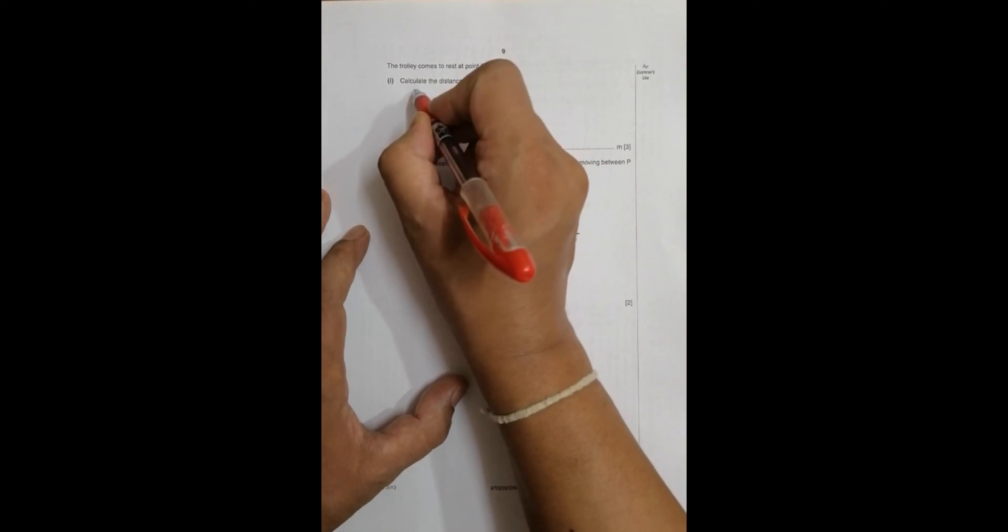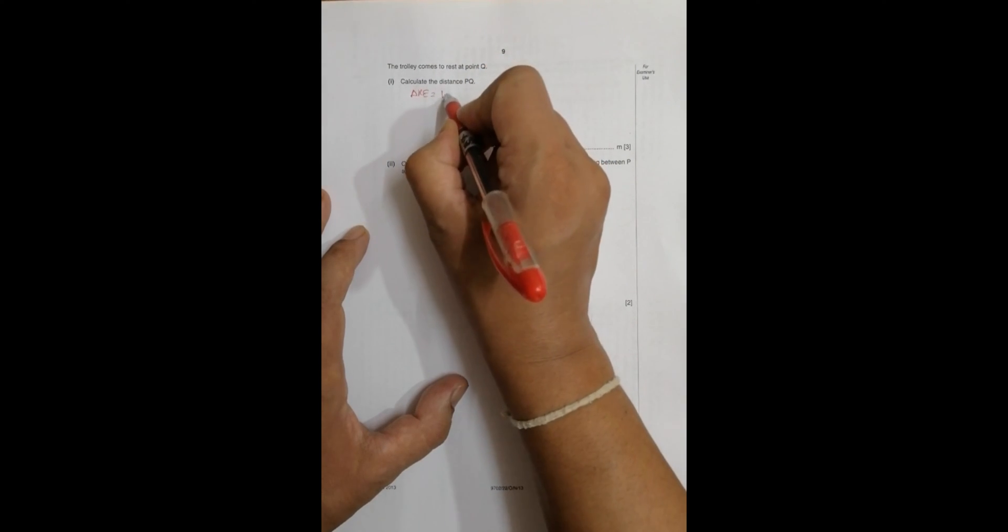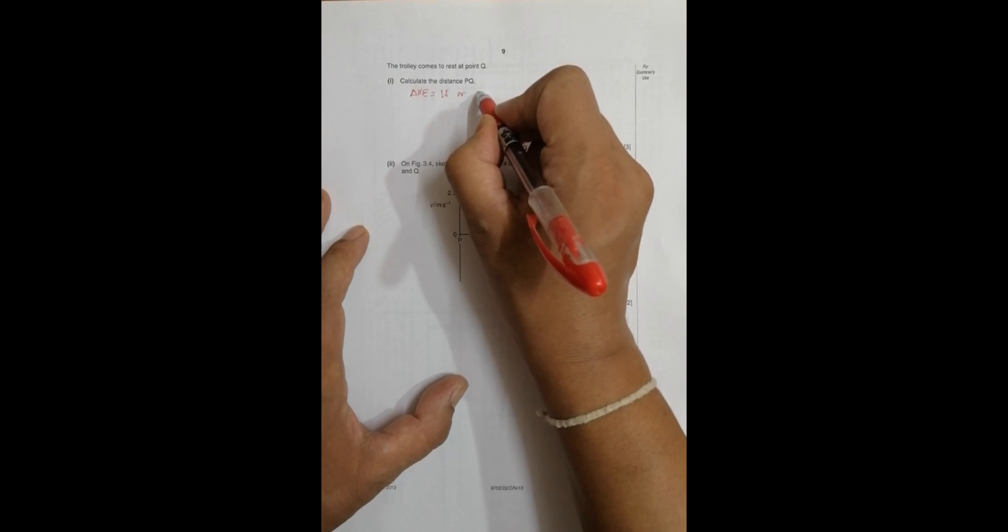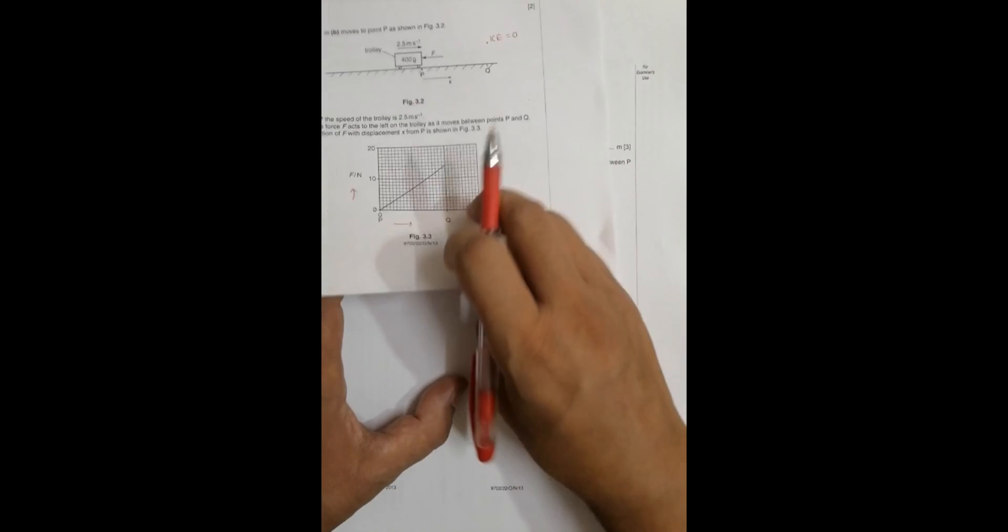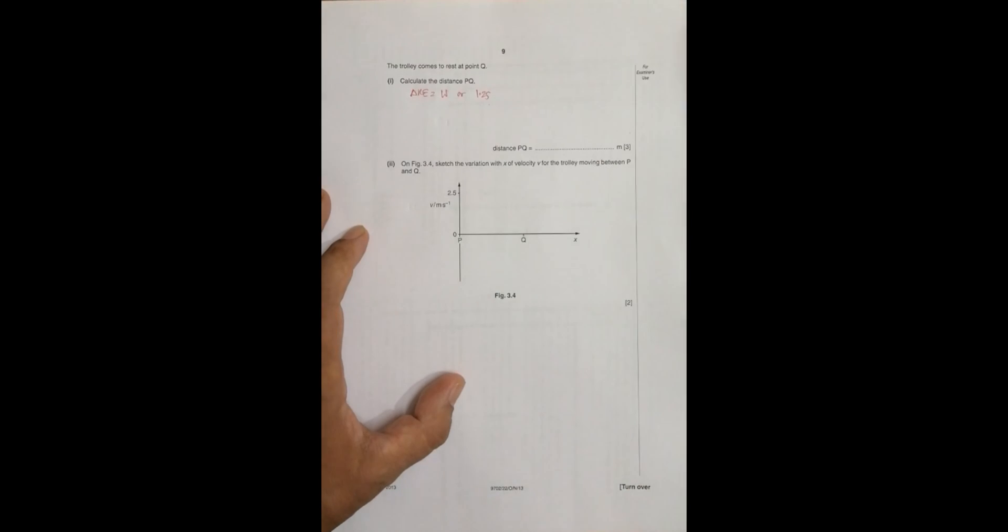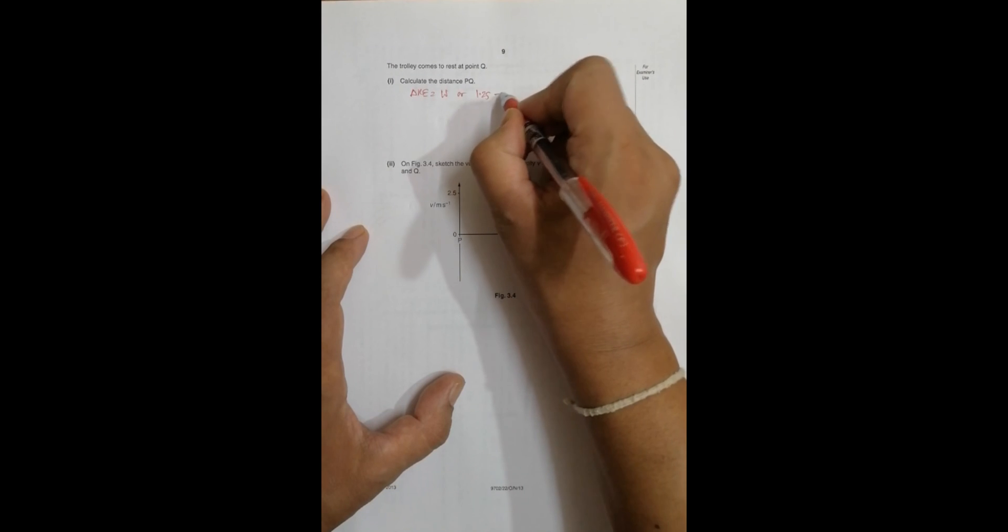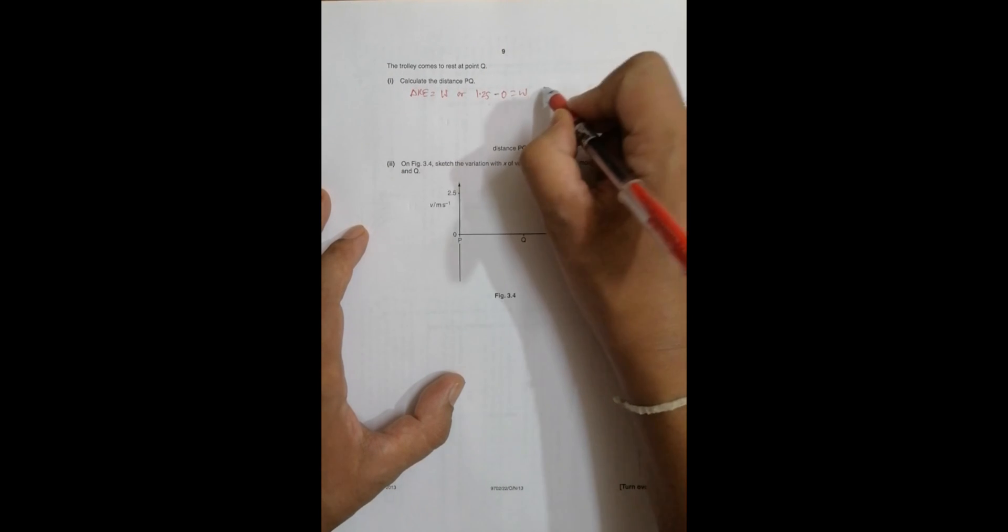So I should have delta KE equals work done on the body, which equals the initial KE is equal to 1.25 joules, which we obtained here, minus 0 equals work done on the body. Therefore, the work done is equal to 1.25 joules.